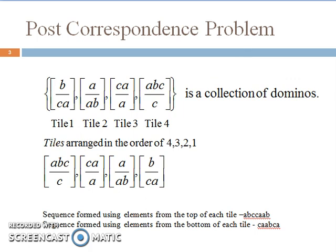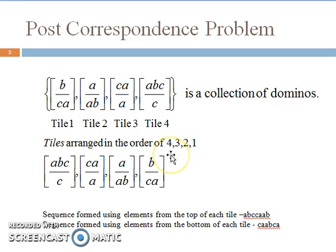Let us consider the 4 tiles as shown. These tiles are called a collection of dominoes. Each tile consists of a top and a bottom. For example, tile 1 has B on top and CA at the bottom. We need to find a sequence formed by elements on the top that is similar to the sequence formed by elements present at the bottom of the tiles.